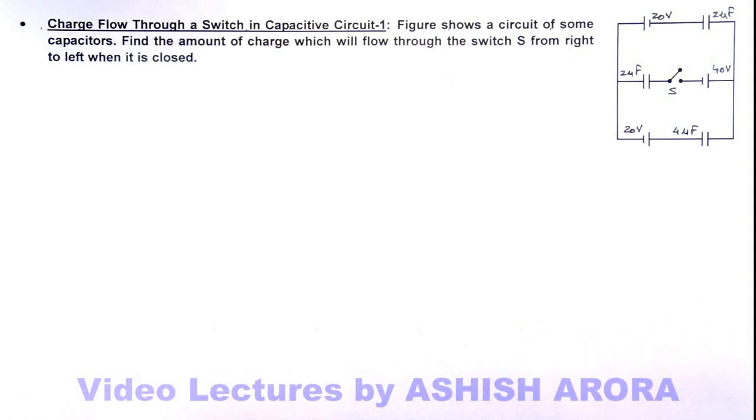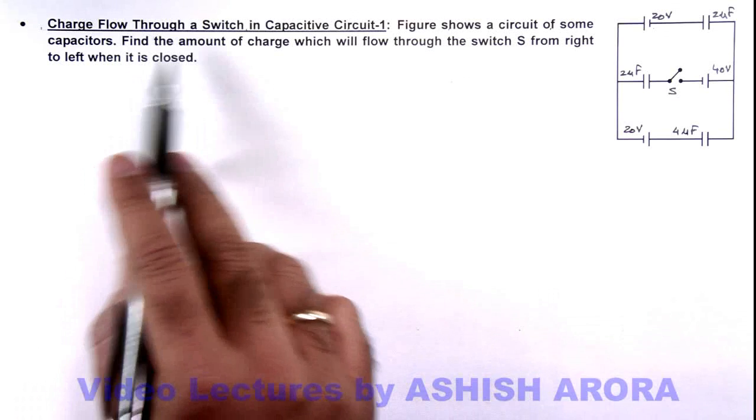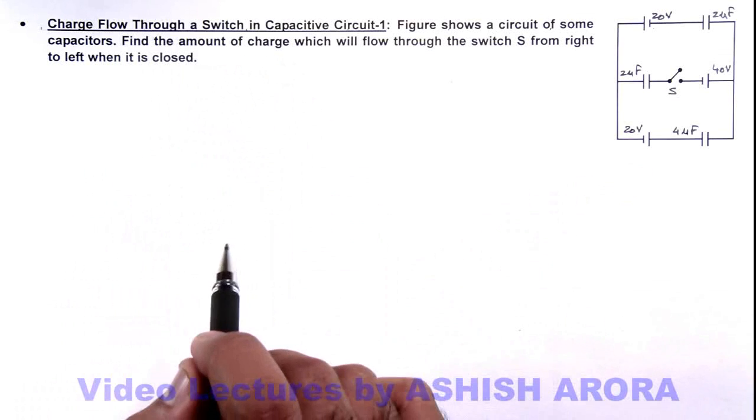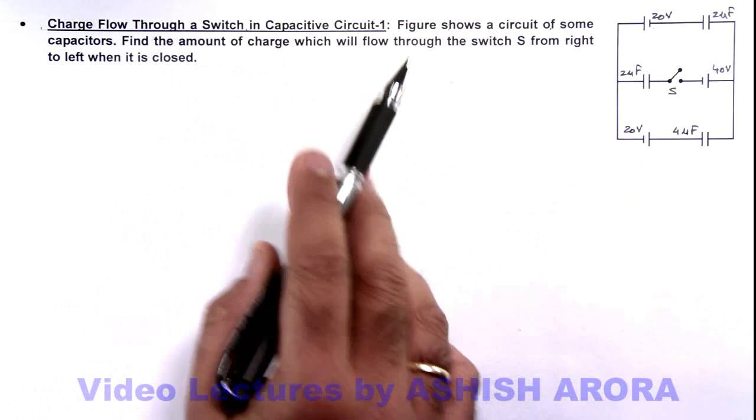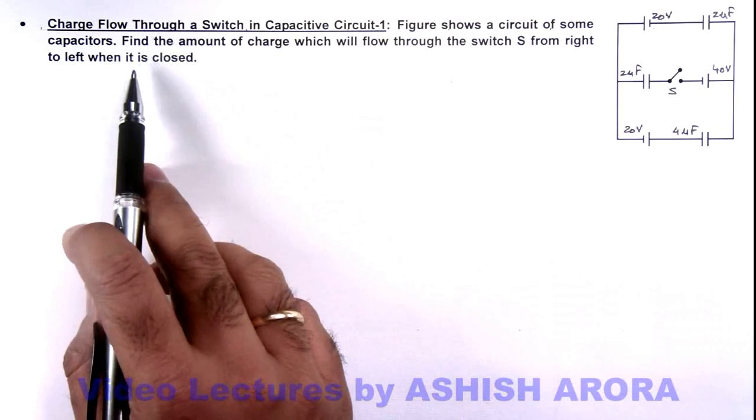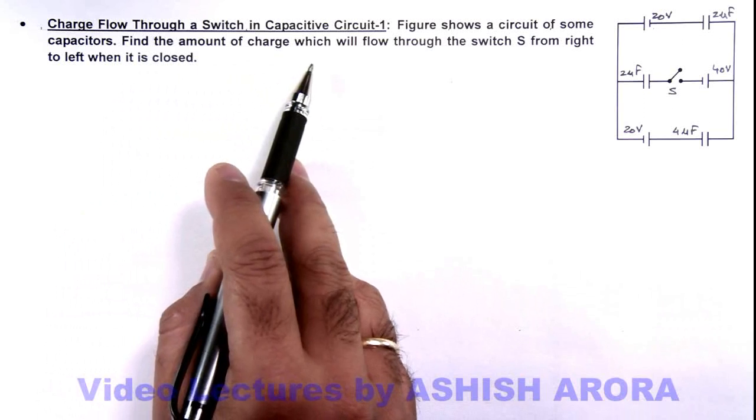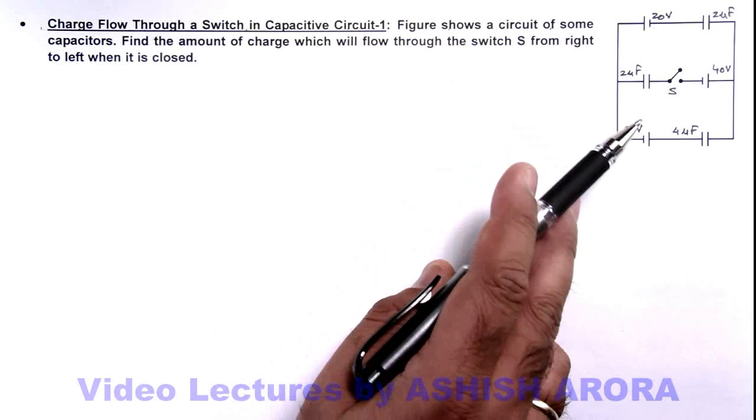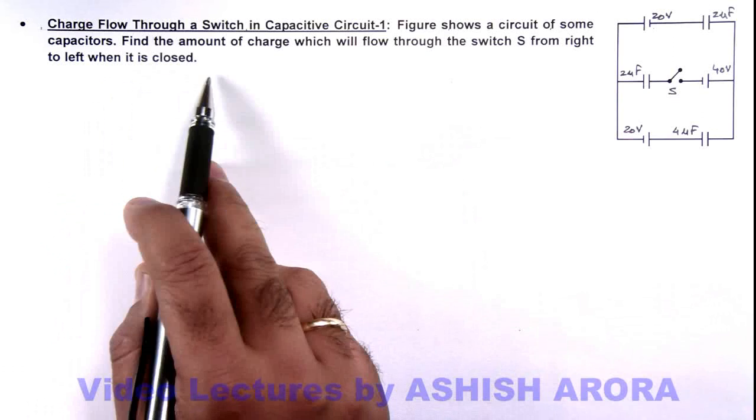In this illustration, we'll discuss the charge flow through a switch in a capacitive circuit. Here we are given a figure which shows a circuit of some capacitors, and we are required to find the amount of charge which will flow through the switch S from right to left when it is closed.